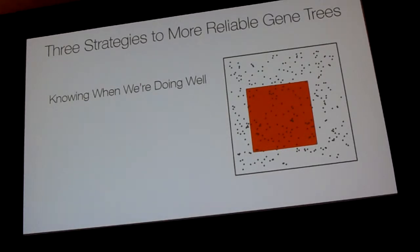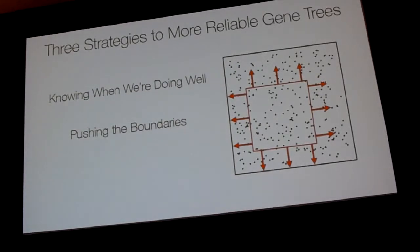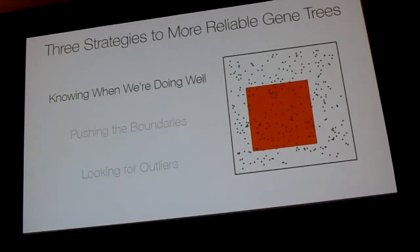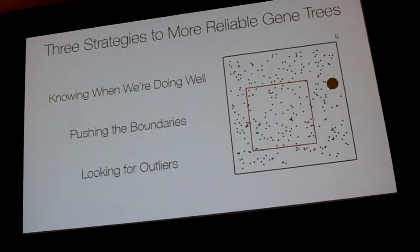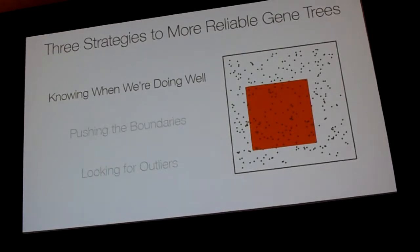I'm going to talk about three strategies we've taken within this framework. The first is to identify when we're inside the red box — which genes can we actually model well? The second is to push the boundaries of this box so we can encompass more genes from across the genome. And the last approach is to look for outlier genes: if the size of circles represents the overall strength of phylogenetic signal, we can look for genes that seem to be doing unusual things, which in our experience are often genes we're not going to do a good job of modeling.